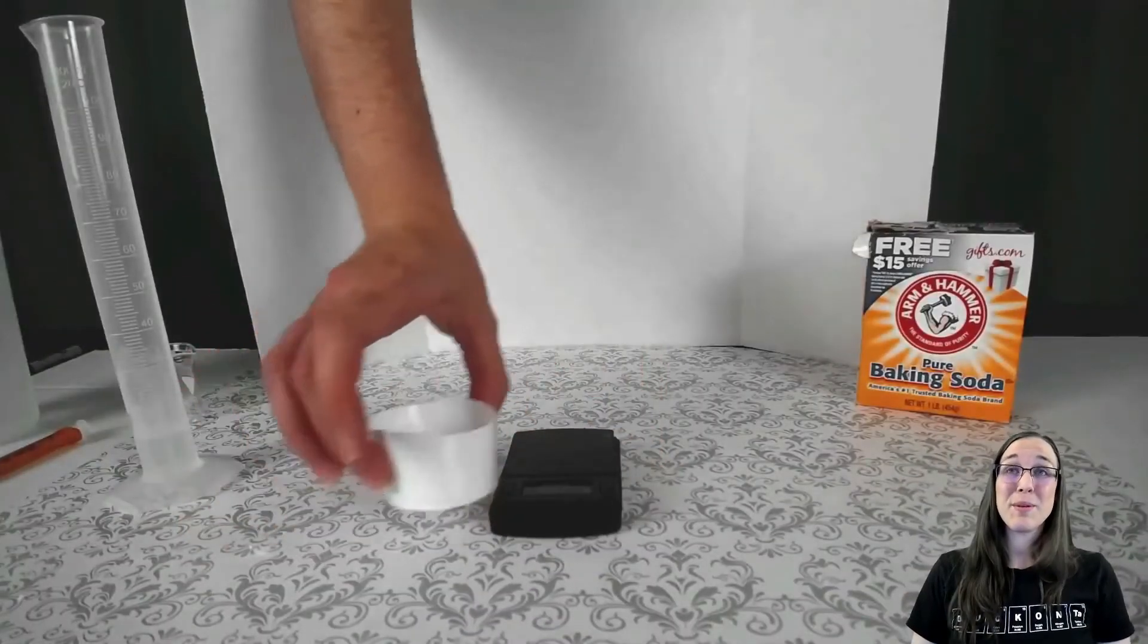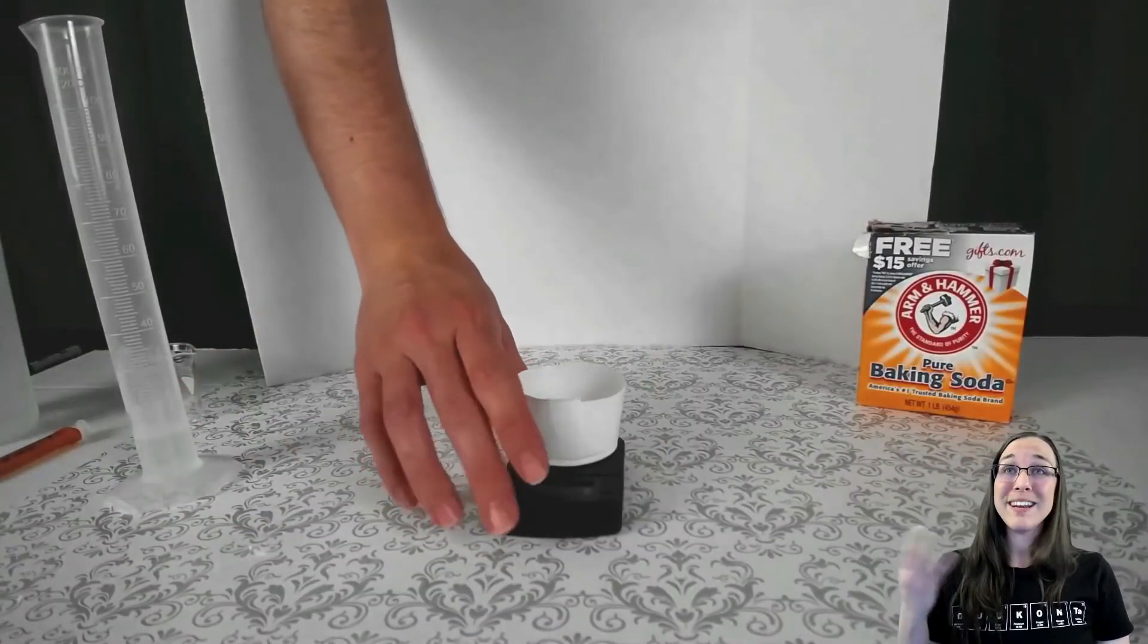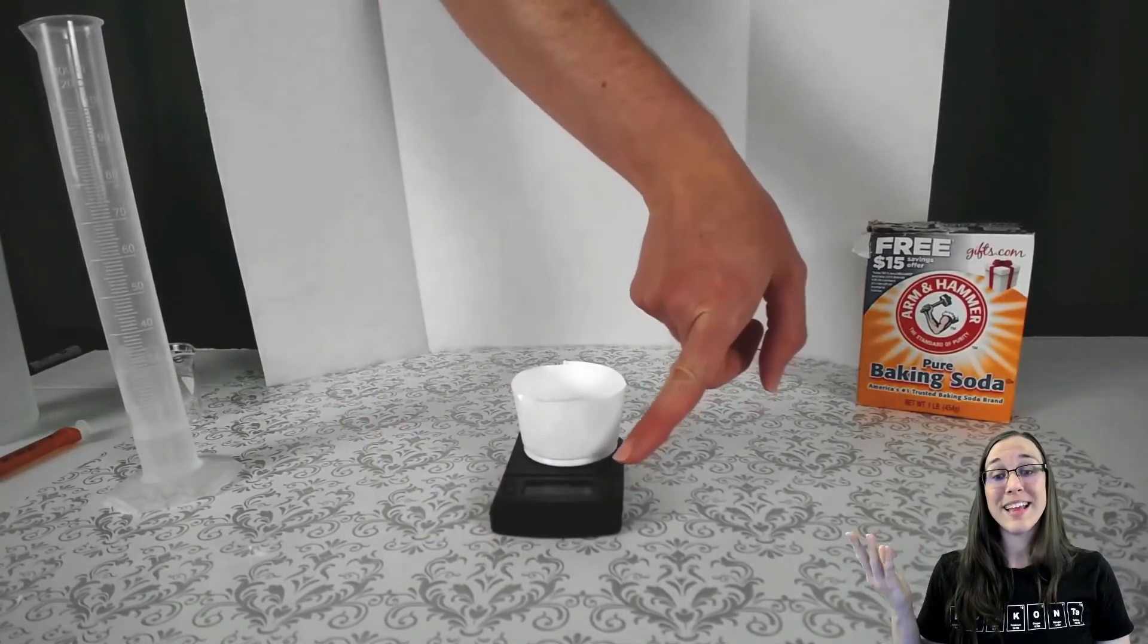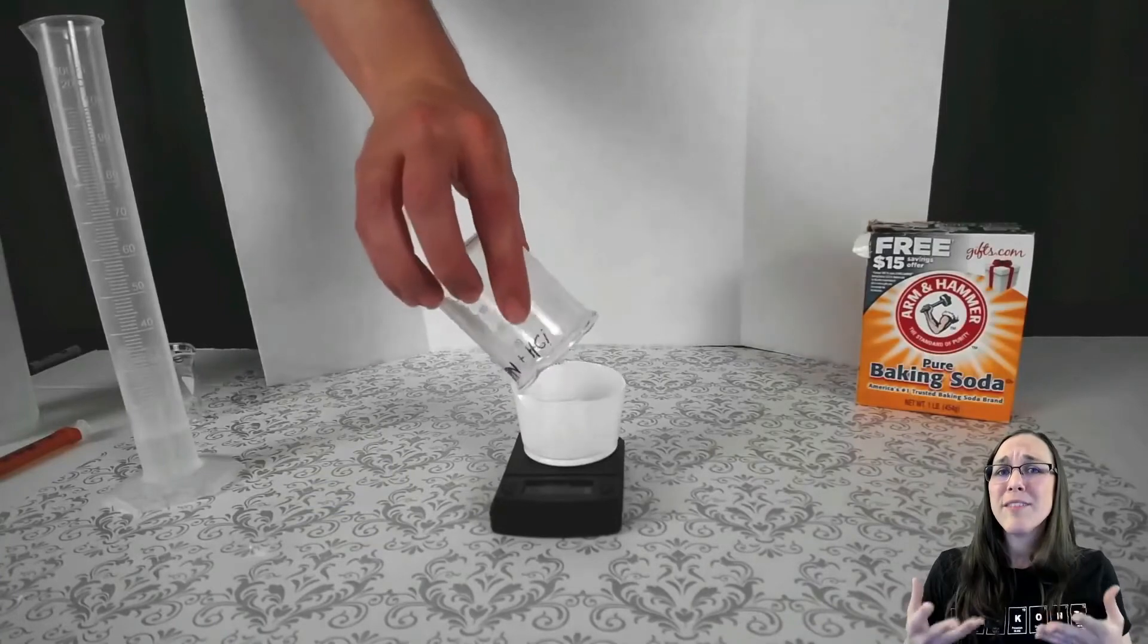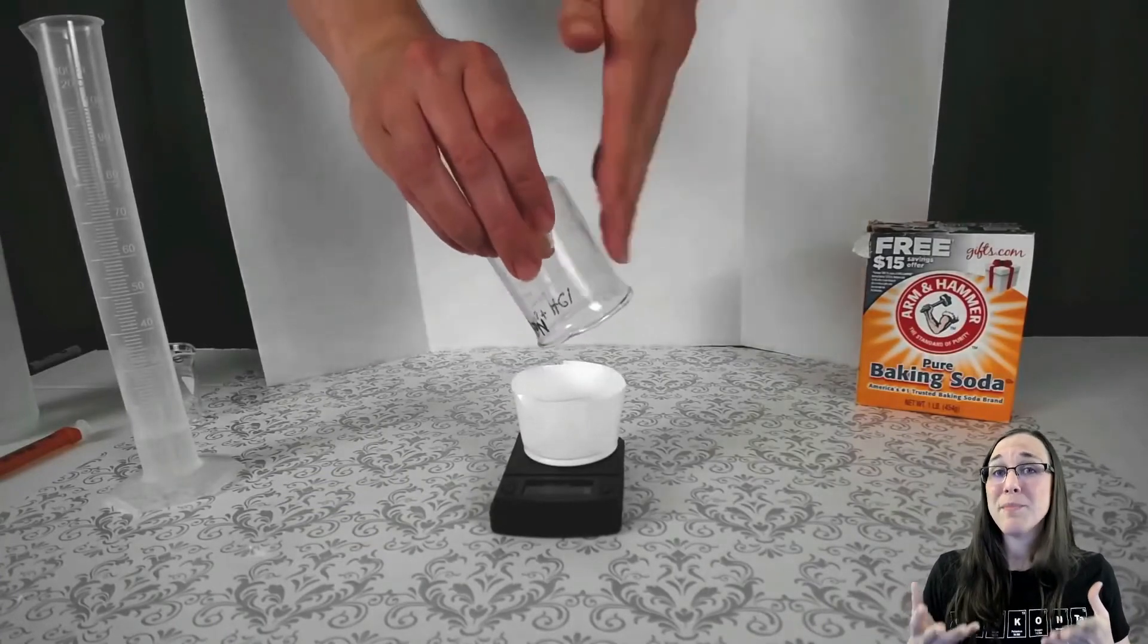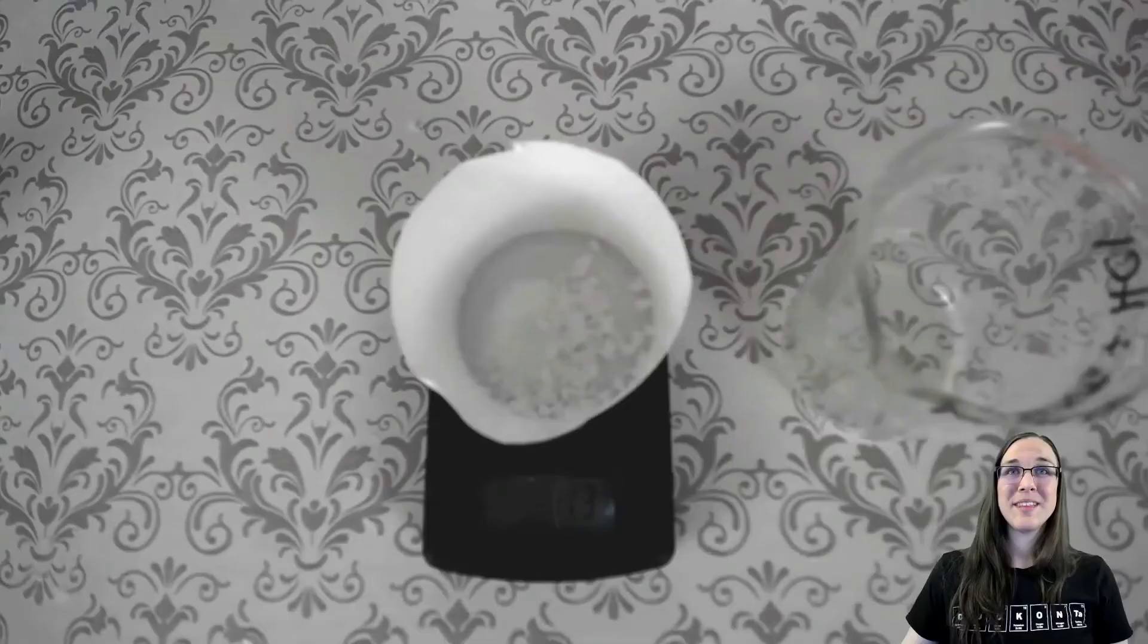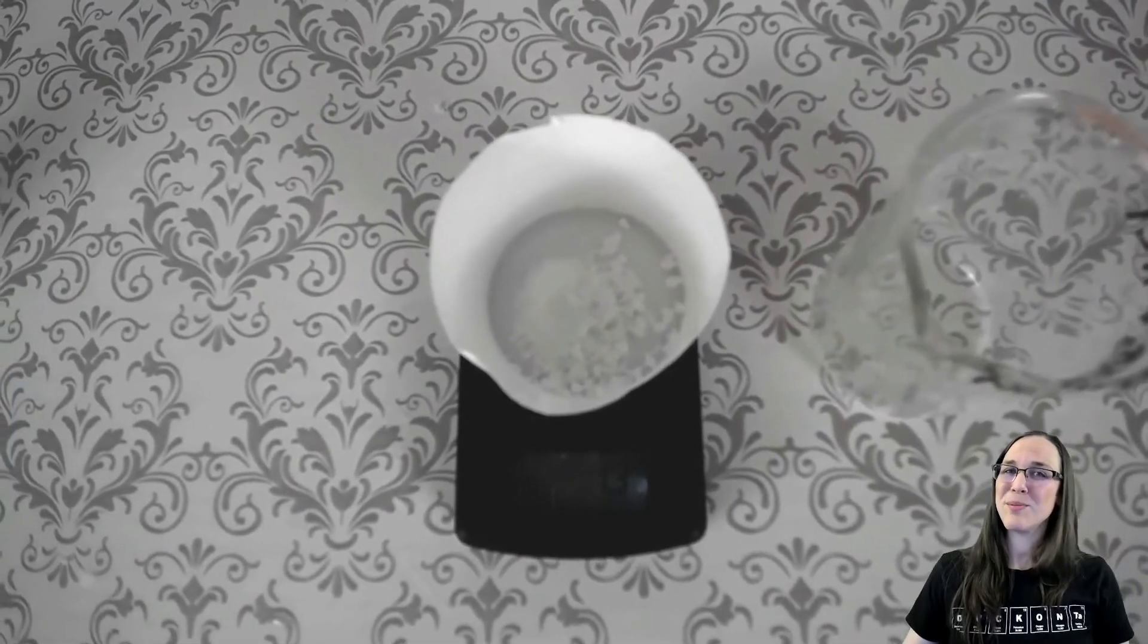Of course, you can also scrape the product out of the beaker and put it in a weigh boat and measure the product that's created by itself. I did this after I measured the beaker because we're inevitably going to lose some product by dumping out some of the salt into the weigh boat. But here you can see we created roughly 1.3 grams of salt.